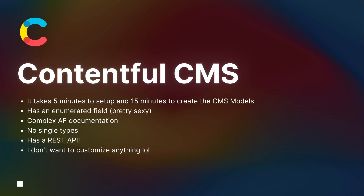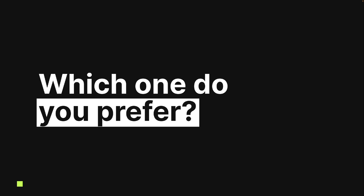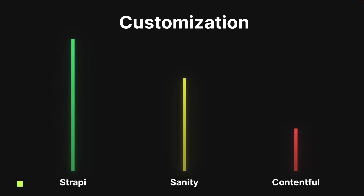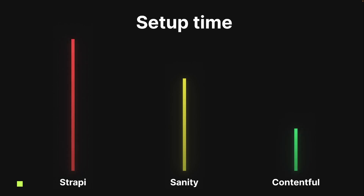Now a better question: which one do you prefer? This comes down to a few key points. First, customization: Strapi offers the most customization, hence why it's open source and one of the most popular CMS options on the market. Sanity offers lots of customization too, but more on the website itself since it uses that slash admin route rather than a separate hosting option. Contentful offers very little customization — basic user settings but not as deep as Strapi or Sanity.